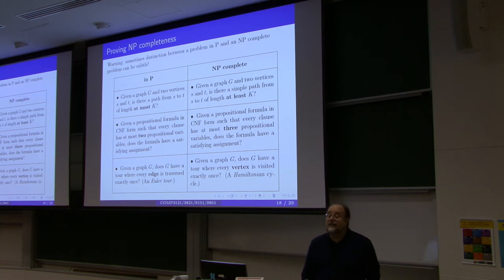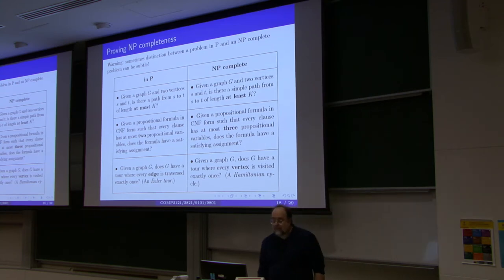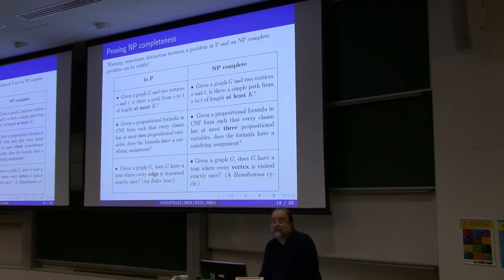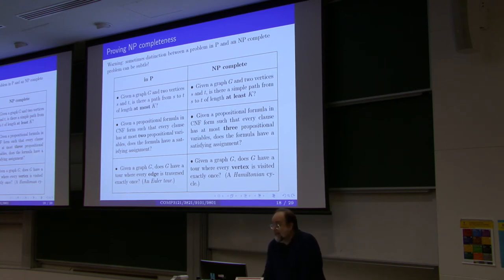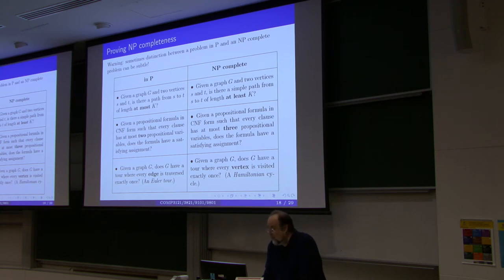Sometimes very similarly sounding problems can be fundamentally of different complexity. For example, if you are given a graph and two vertices, answering the question of whether there is a path from S to T of length at most k is just the shortest path question, and we know it's solvable in polynomial time. However, if you are given a graph and you have to answer whether there exists a simple non-self-intersecting path of length at least k, well — this is an NP-complete problem, so you cannot solve it in polynomial time.